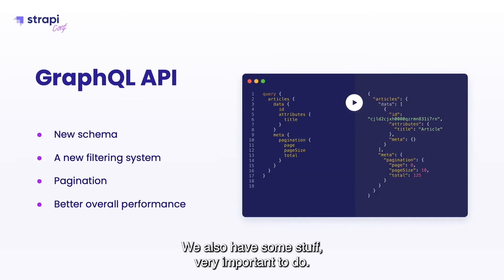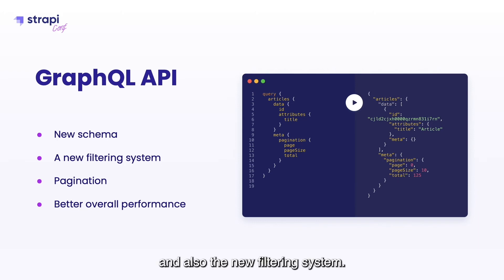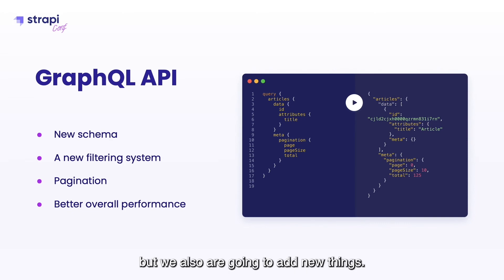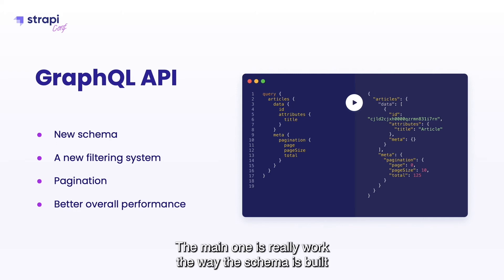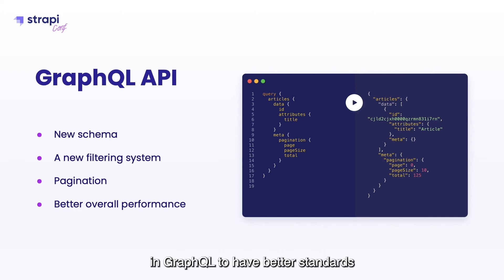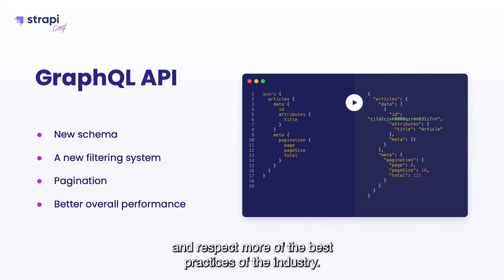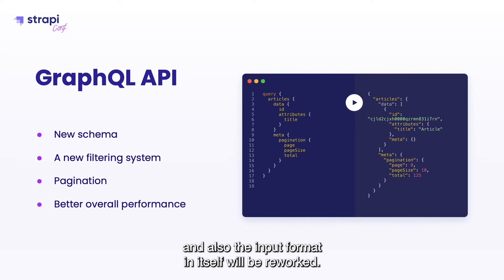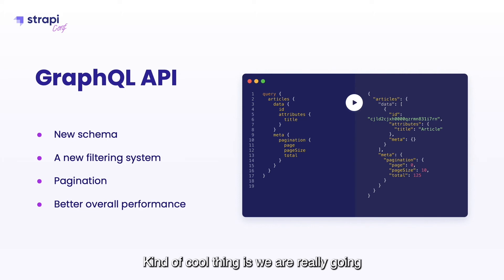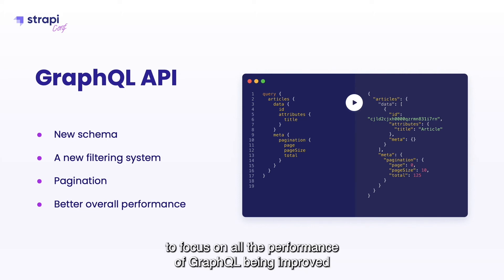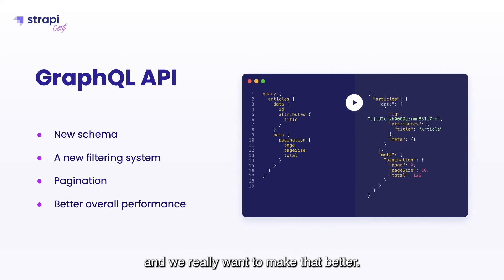On the GraphQL side, we also have some important work to do. Same as the REST API, we are going to add pagination and the new filtering system, and we want to make them consistent between REST and GraphQL. But we're also going to rework the way the schema is built in GraphQL to have better standards and respect more industry best practices — better required fields, better input checks, and a reworked input format. We are also really going to focus on improving GraphQL performance, which has been a pain point for a while.